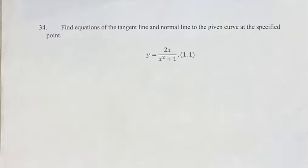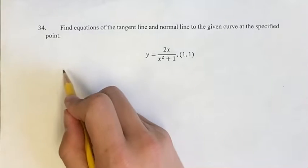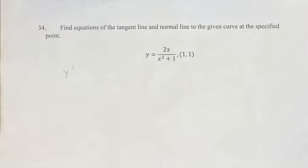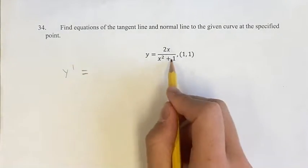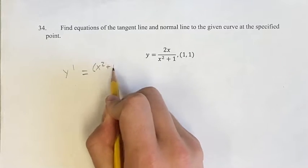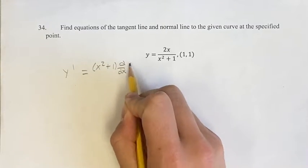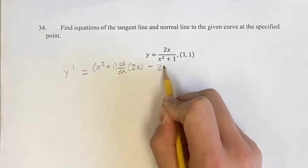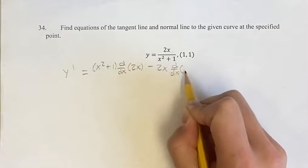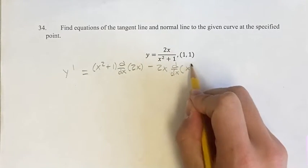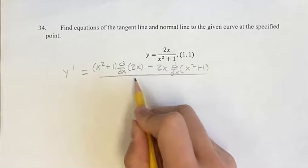First things first, we're going to find the slope of the tangent line using the derivative. The derivative we're going to find using the quotient rule, since we have a fraction here, which is going to leave us with the denominator times the derivative of the numerator, minus the numerator times the derivative of the denominator, over the denominator squared.